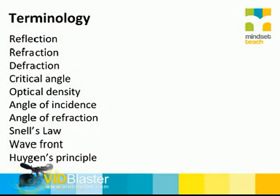You've made a list of terminology for us to go through. The first word is reflection. Reflection — in grade 11 you'll just have to revise it — is the bouncing back of light. When you shine light on a shiny surface like a mirror, the light tends to be bounced back. That is reflection.